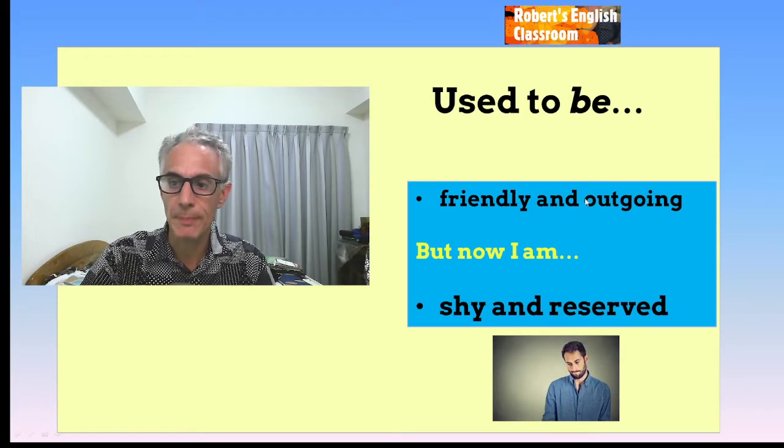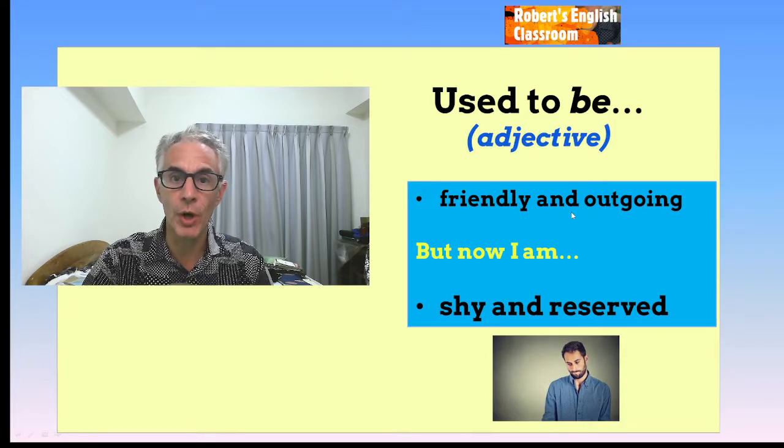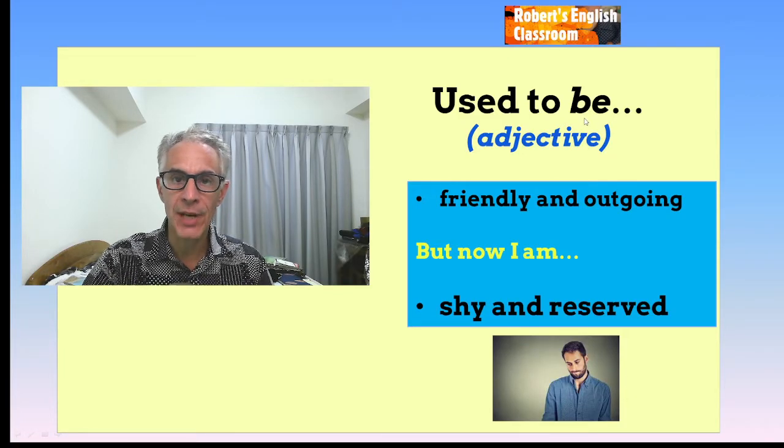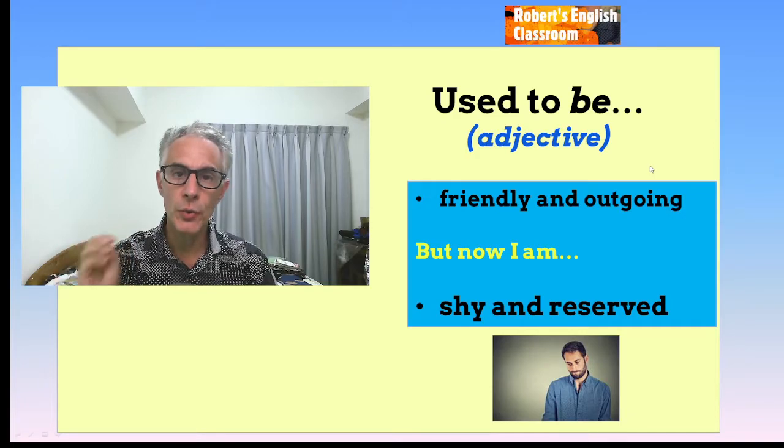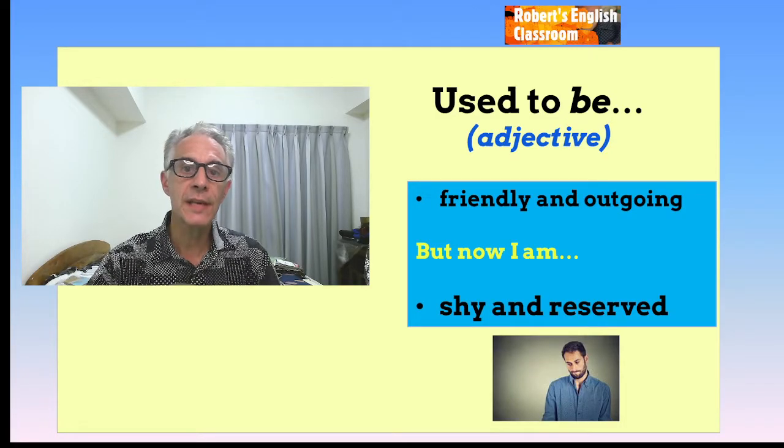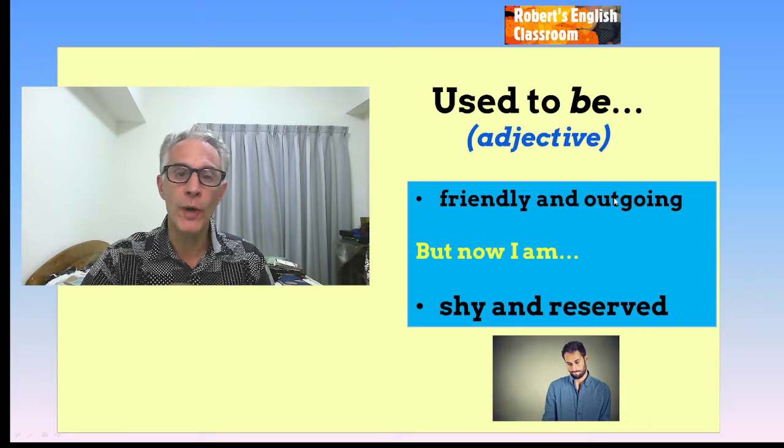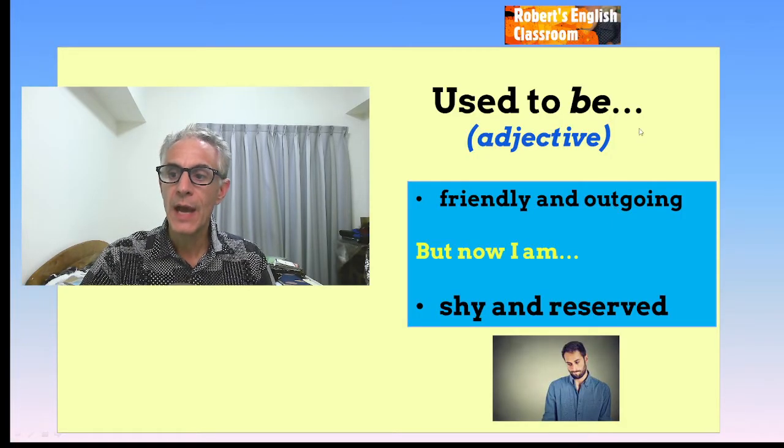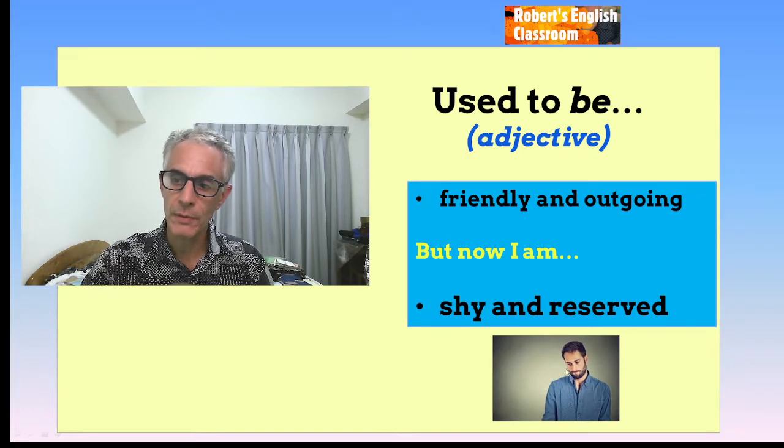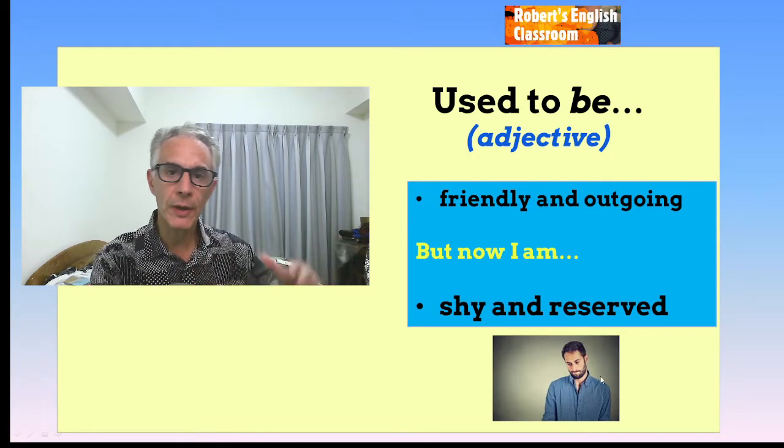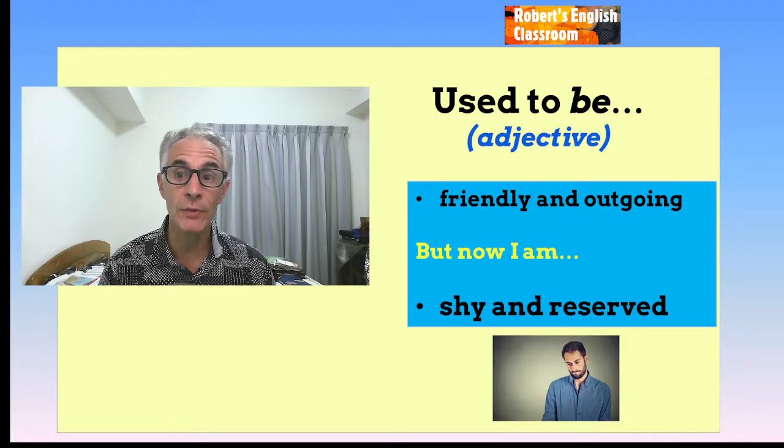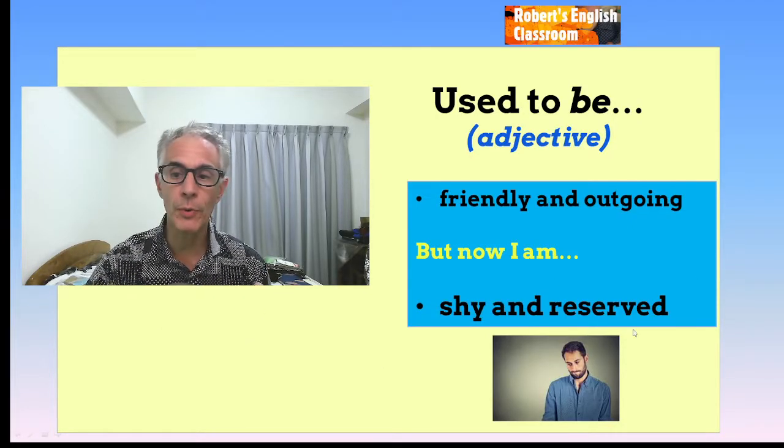So now, let's change to used to be. With used to, we did a verb. But now, used to be is an adjective. Because the be has become the verb. Listen to how I say it. Used to be. Used to be. The D is not there. Used to be. Let's look at these examples here. Friendly and outgoing. Those are my adjectives. I used to be friendly and outgoing. But now, I am shy and reserved. Like the picture. Before, I'm friendly, outgoing. Hey! Like to party. Now, I'm like quiet. Stay at home. Homebody. Shy and reserved. Used to be. Very simple. Just put the adjective after.